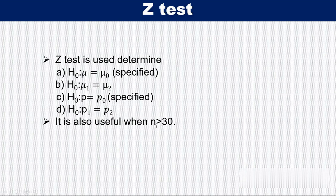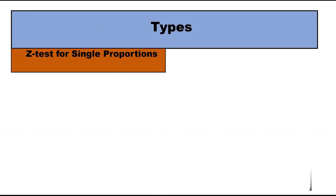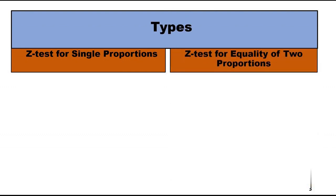In this video we will discuss z-test for proportion. Let's understand the types of z-test for proportion. There are two types of z-test: the first one is z-test for single proportion and the other one is z-test for equality of two proportions.